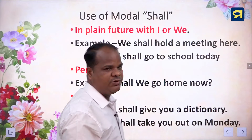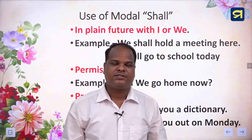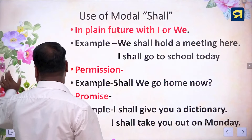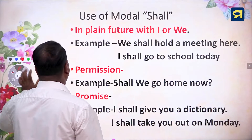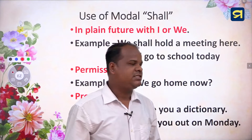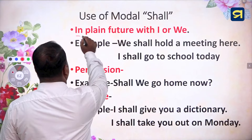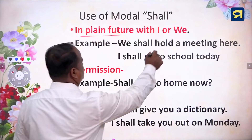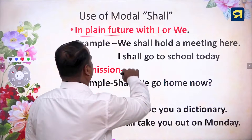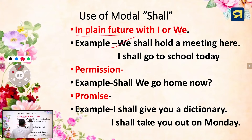So, today we shall discuss about the modal auxiliary verbs. The first verb is 'shall'. Let's know about shall. We can use shall in different meanings, such as the first one is in the plain future, with the subject I and we. Let's have an example: 'We shall hold a meeting here.' Again, 'I shall go to school today.' This is the example of the use of shall modal verb.